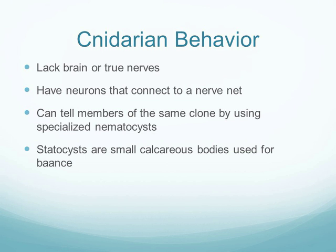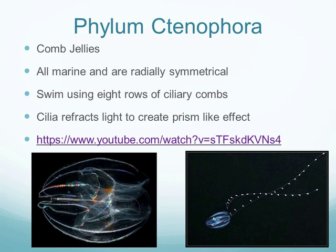Cnidarians use specialized nematocysts for capturing prey. They also have statocysts — small calcareous bodies used for balance and orientation — that tell them if they are upside down, right-side up, or moving in a particular direction, similar in function to the human inner ear.